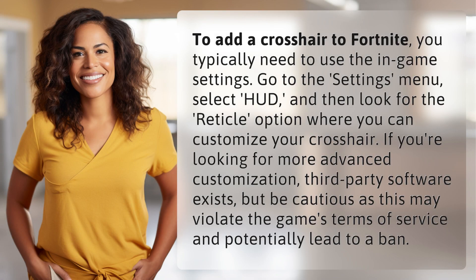To add a crosshair to Fortnite, you typically need to use the in-game settings. Go to the Settings menu, select HUD, and then look for the reticle option where you can customize your crosshair.